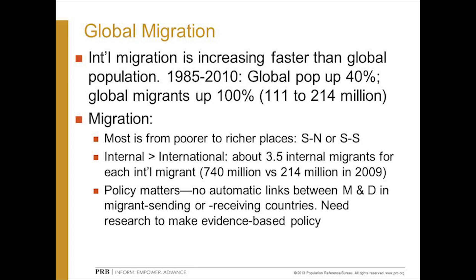International migration is going up faster than the global population. While the global population went up about 40% in the last 25 years, the stock of international migrants roughly doubled in that same period. It's also important to emphasize that there is far more internal migration than international migration — there are almost four internal migrants, such as those moving from rural to urban areas in China, India, or Brazil, for each international migrant.